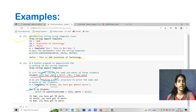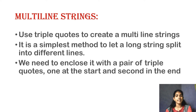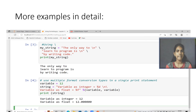The final topic is multiline strings. What are multiline strings? We use triple quotes to create multiline strings. It is the simplest method to let a long string split into different lines; we enclose it with a pair of triple quotes, one at the start and one at the end. For the first example, using a newline statement: my_string equals to 'the only way to\nlearn to program is by writing the code'. Print my_string outputs it across two lines.